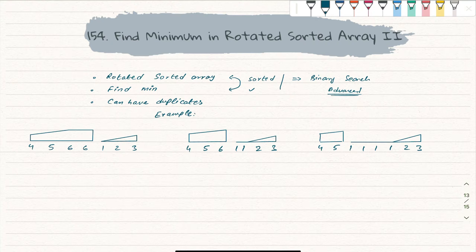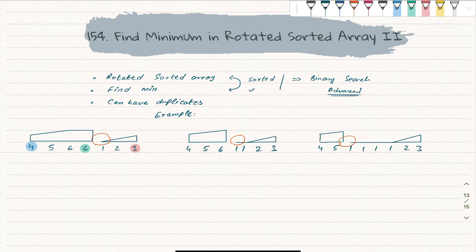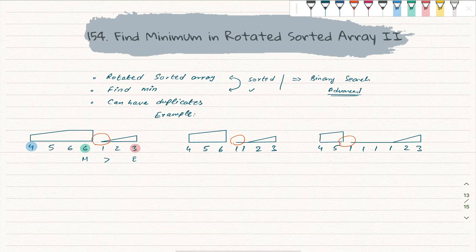Considering these three examples, we will take a left pointer, a right pointer, and a mid pointer. We will try to find the rotation point where the array starts rotating, because that is where we can find the minimum element. In the first example, when we find mid we ask: is mid greater than end? If it is, then the rotation point is somewhere between mid and end, and we do binary search accordingly.